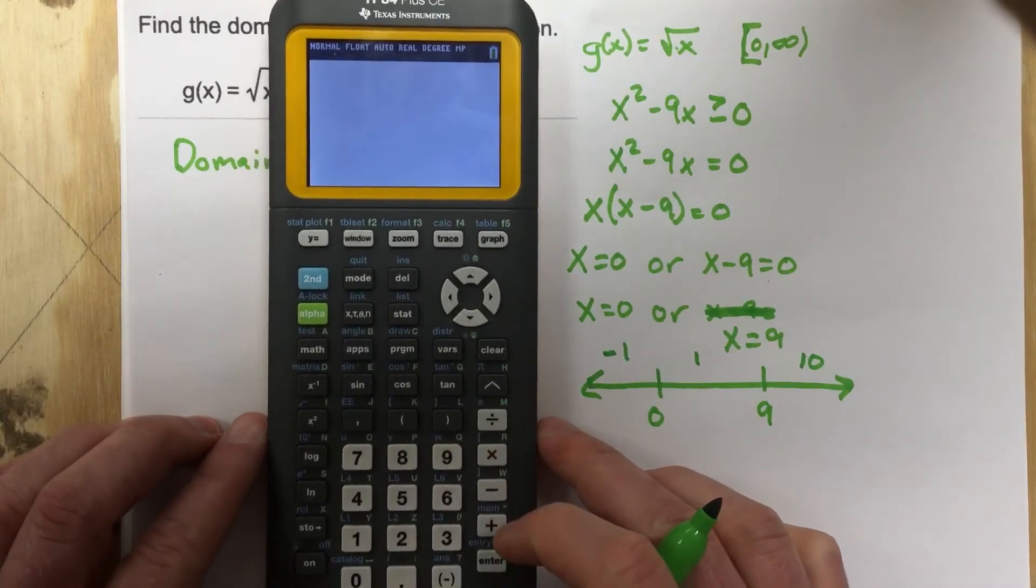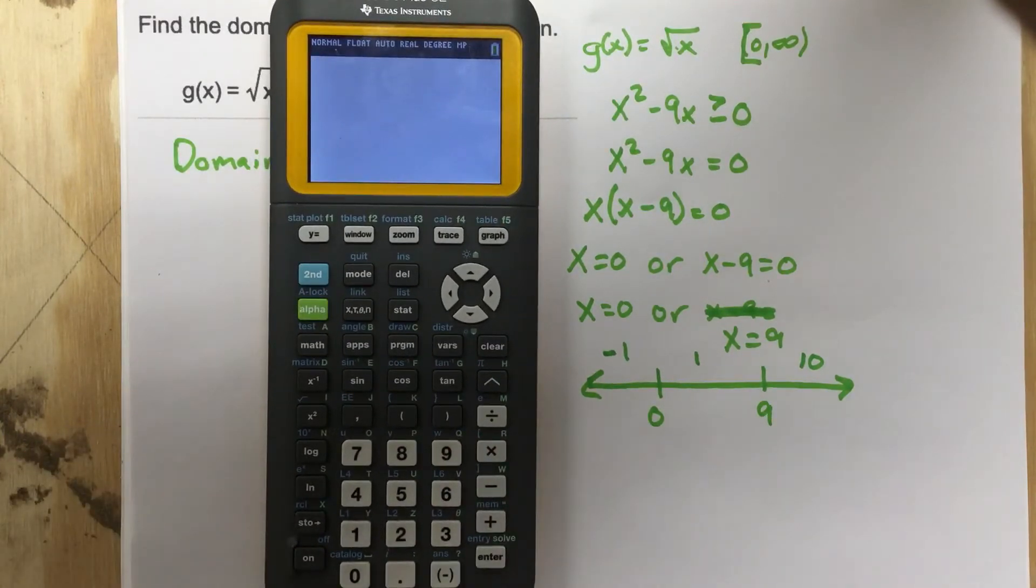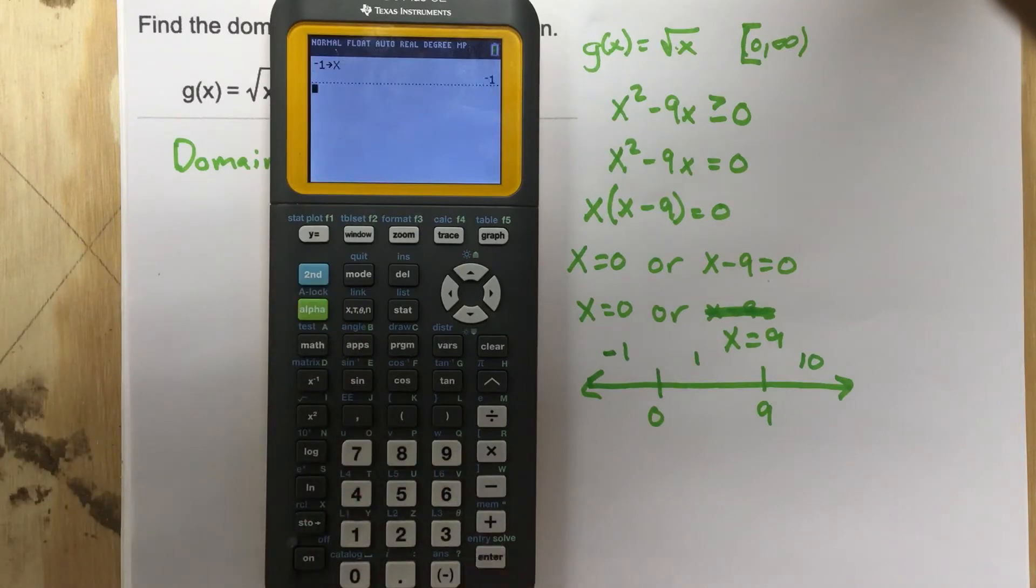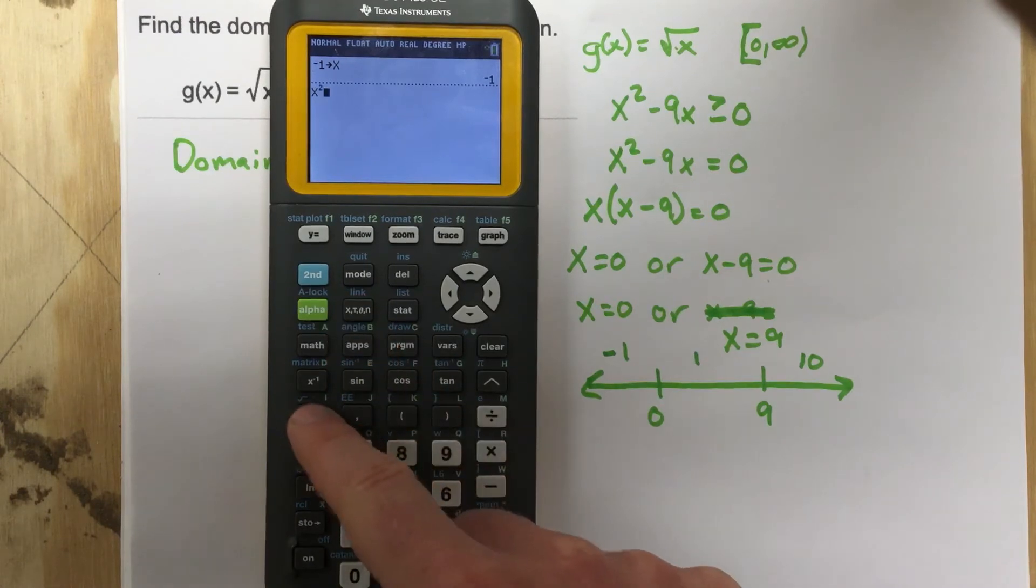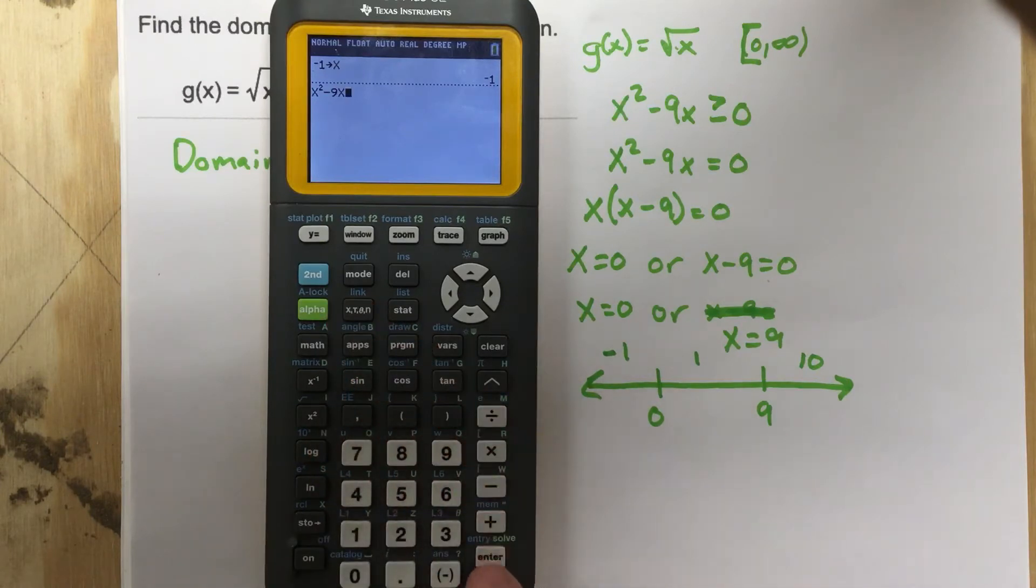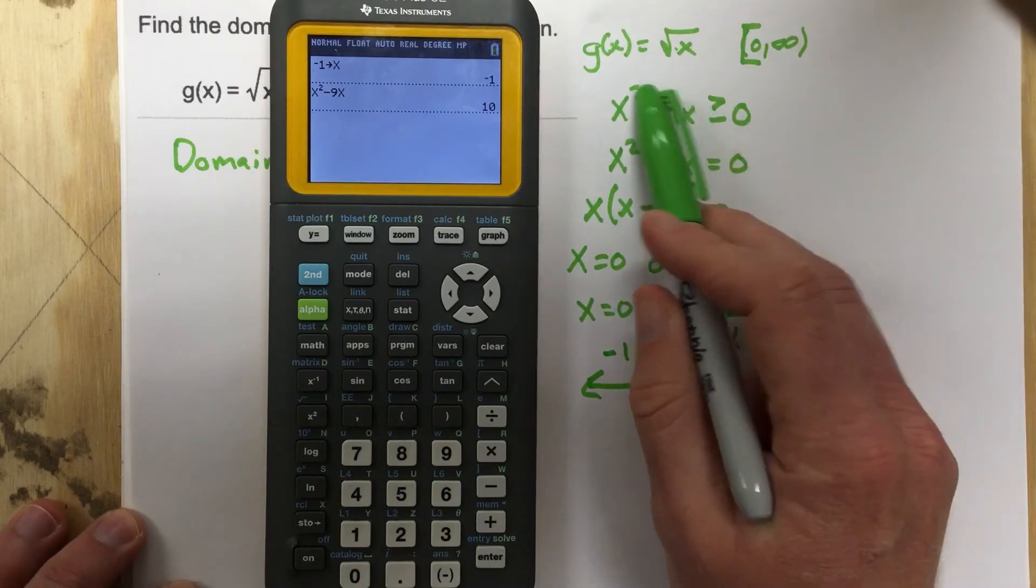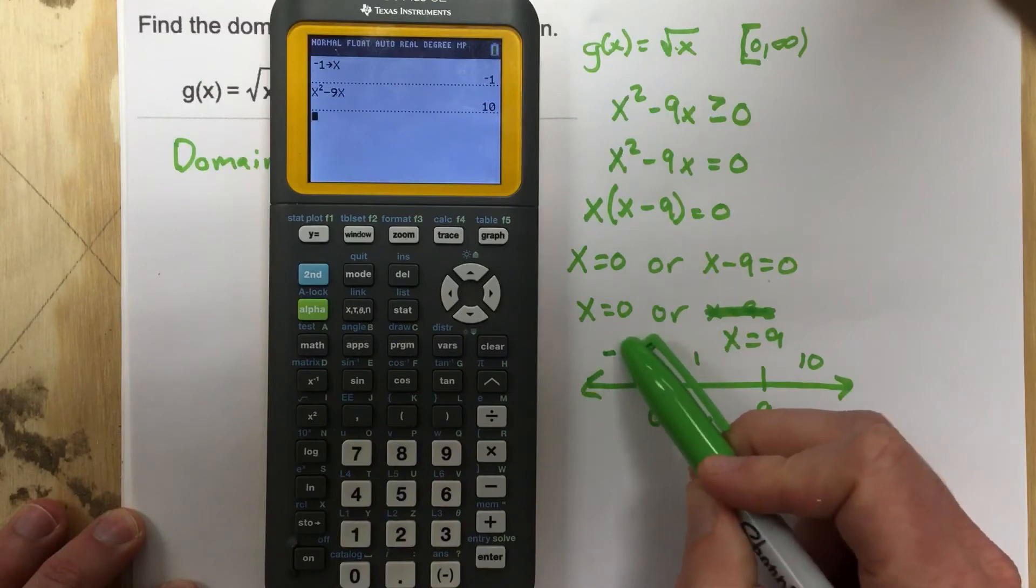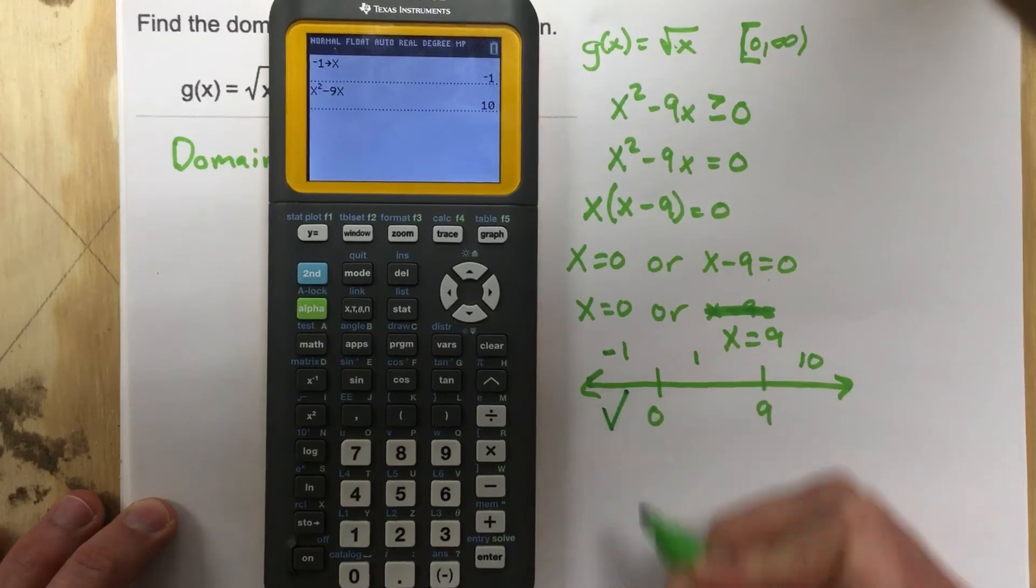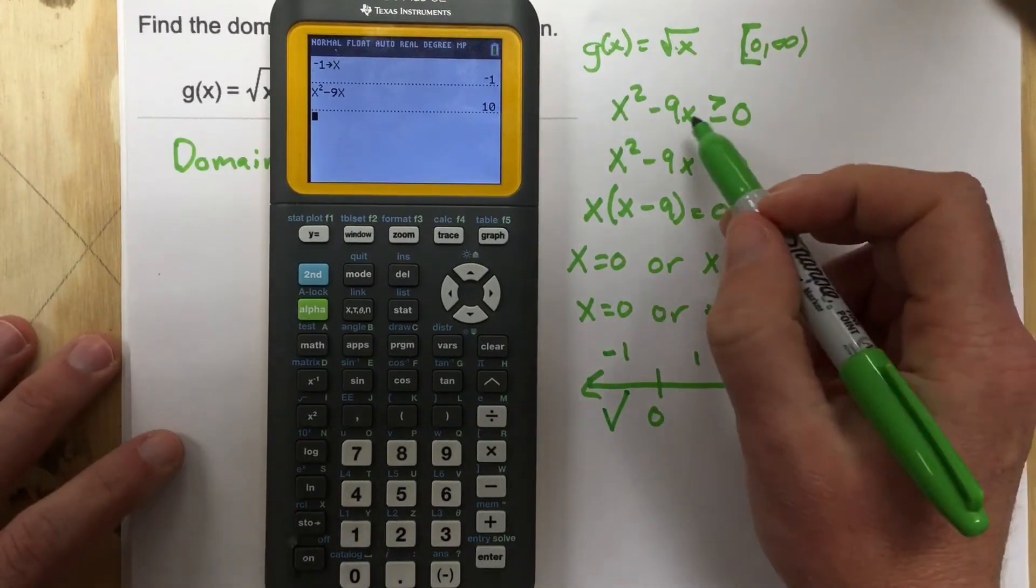So I'm gonna say that I want to store negative 1 as x. So negative 1, store it as x. And then I want to take and type in x squared minus 9x. And then hit enter. And you'll notice I get 10. So I ask myself, is 10 greater than or equal to zero? Right? I'm checking this inequality. I got 10 when I plugged in negative 1. Is 10 greater than or equal to zero? Yes, it is. So this is an area where I have solutions to this polynomial inequality.